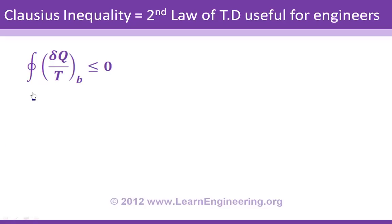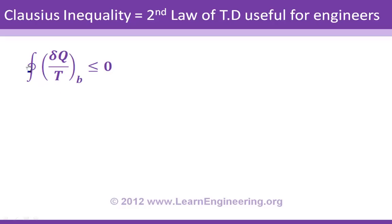Here is the Clausius inequality — a small but deep equation. It is a cyclic integral: you integrate the quantity dQ/T along the boundary of a cyclic process, where dQ is the heat absorbed at the boundary and T is the temperature at the boundary in absolute (Kelvin) units. The Clausius inequality states that this integral is always less than or equal to zero.